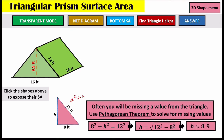We know a² plus b² equals c². We have our a, our b, and our hypotenuse which is 12. So the equation is: 8² plus h² equals 12². Subtracting 8² from both sides, h equals the square root of 12 squared minus 8 squared, which gives us an approximate answer of 8.9 — we're rounding.